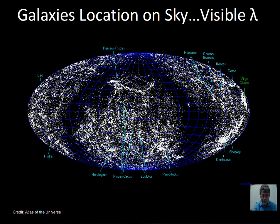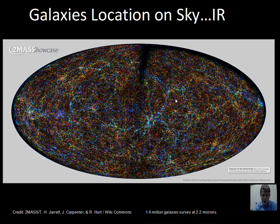The fact that we see some galaxies in some directions and no galaxies in others is not because the Milky Way is at a special place in the universe. It's because there's dust in the disk of the Milky Way that blocks visible light, unless we use a wavelength — like infrared — that can more easily pass through the dust.